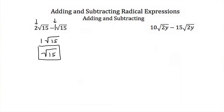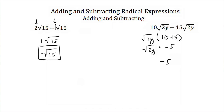Here we have 10 square roots of 2y minus 15 square roots of 2y. Factor out the square root of 2y and you're left with 10 minus 15, all multiplied by the square root of 2y. 10 minus 15 is negative 5, so 10 square roots of 2y minus 15 square roots of 2y equals negative 5 square roots of 2y. You just subtract the coefficients in front of your radical term.